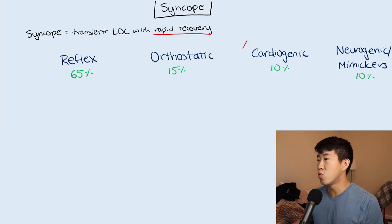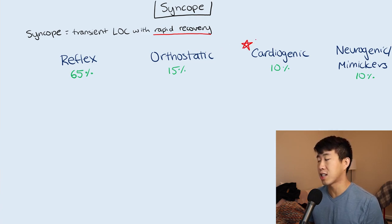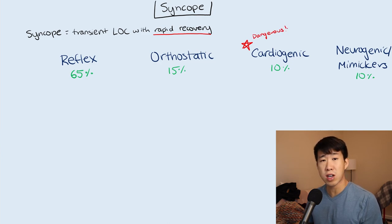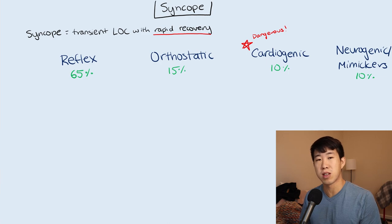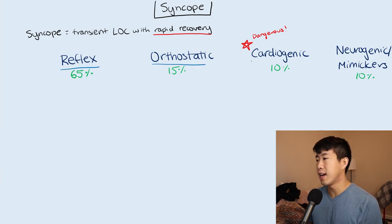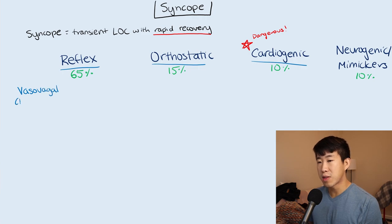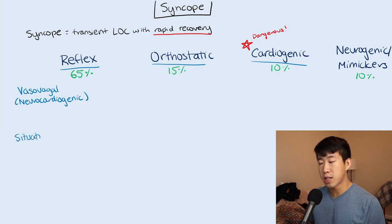The key thing we want to do is assess whether the patient is having cardiogenic syncope, because this is the most dangerous one — the thing we're definitely trying to rule out. Starting with reflex syncope, the most common type is vasovagal syncope, sometimes referred to as neurocardiogenic. You also have situational syncope and carotid hypersensitivity.